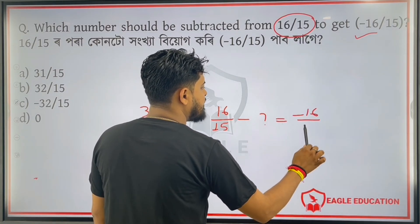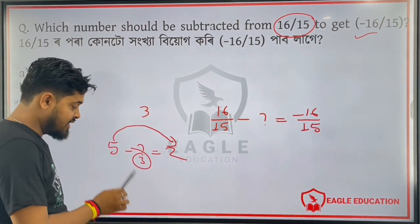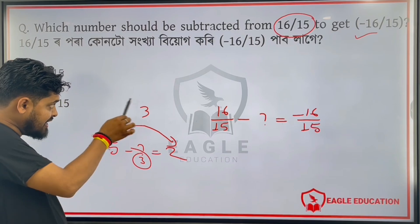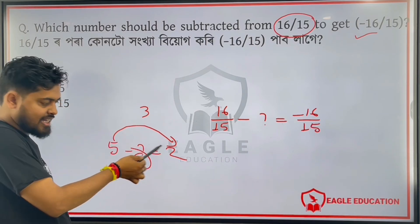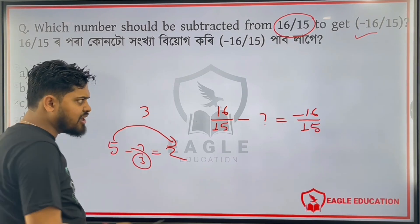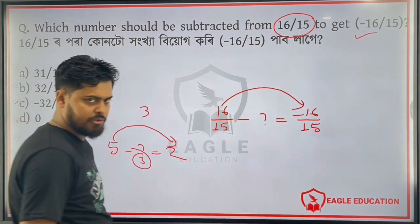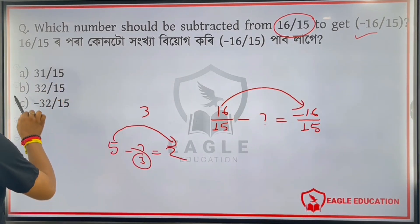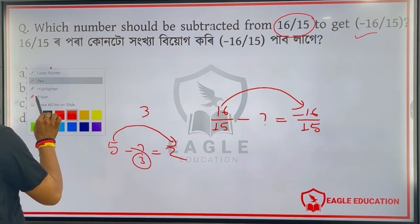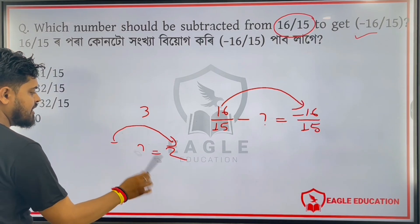16 by 15. What did we do? A2 minus A2. What did we do? A2 minus A2. 16 by 15 — we took A2 minus A2.